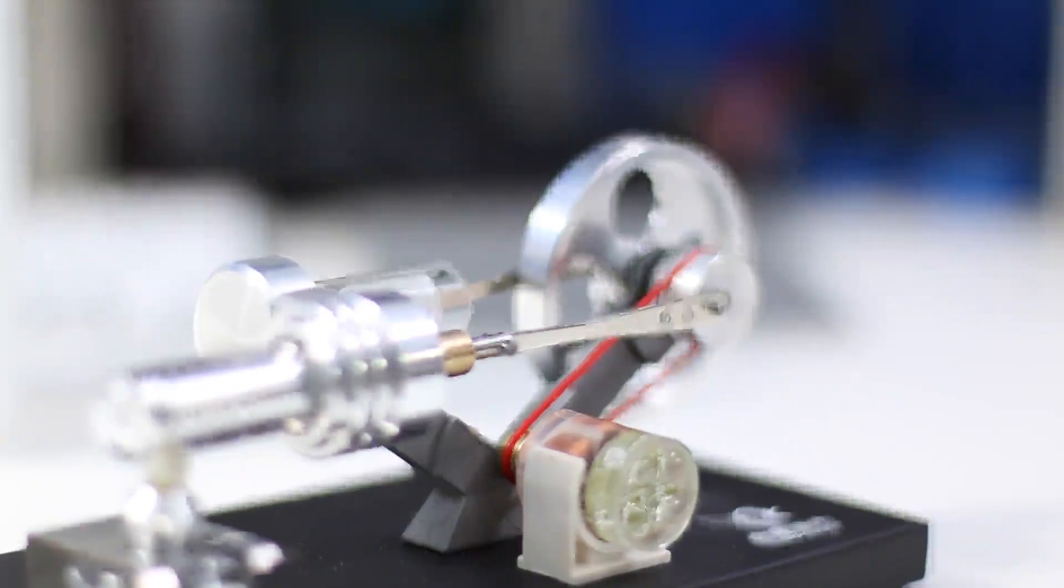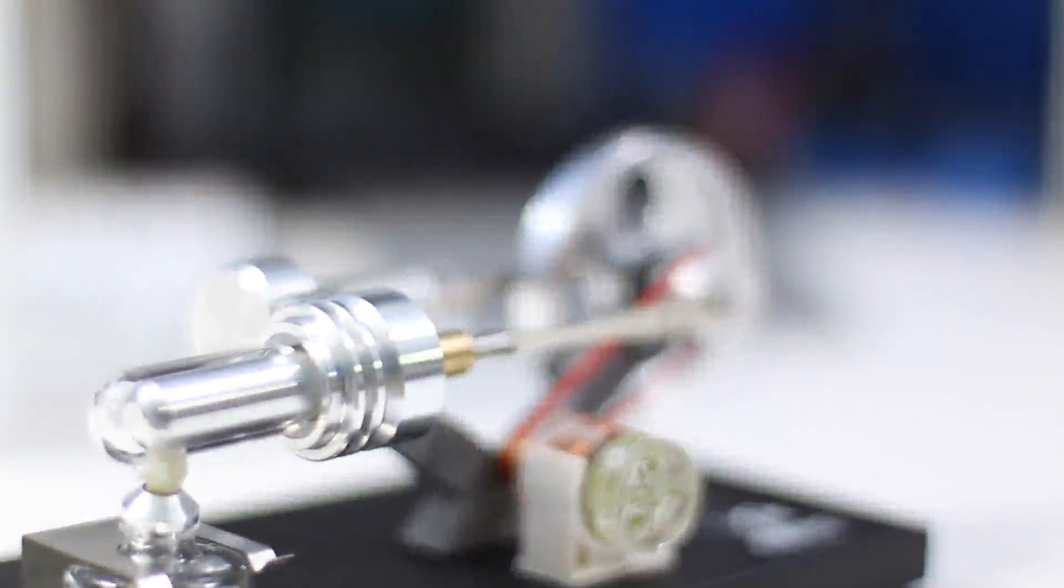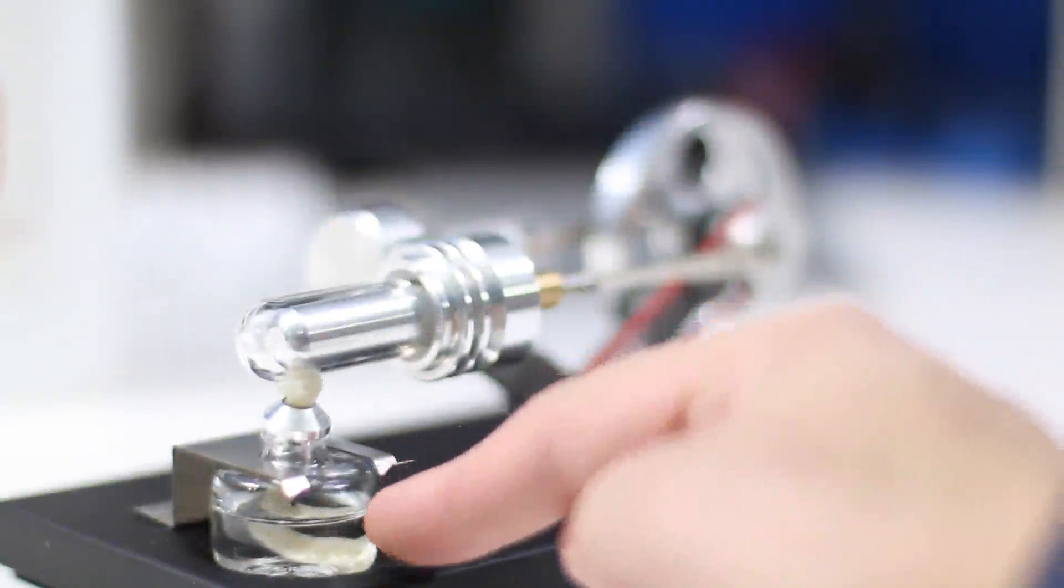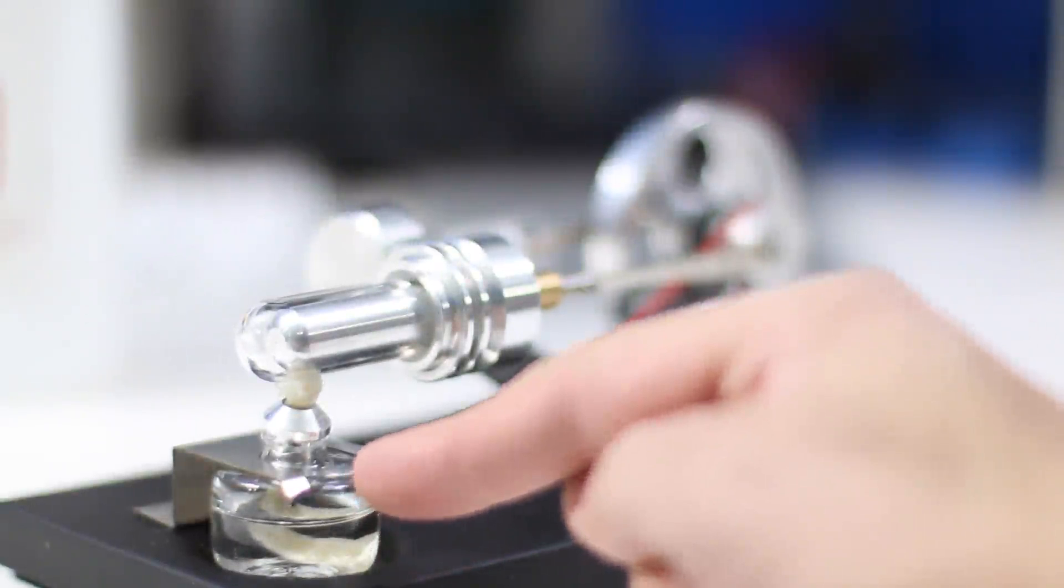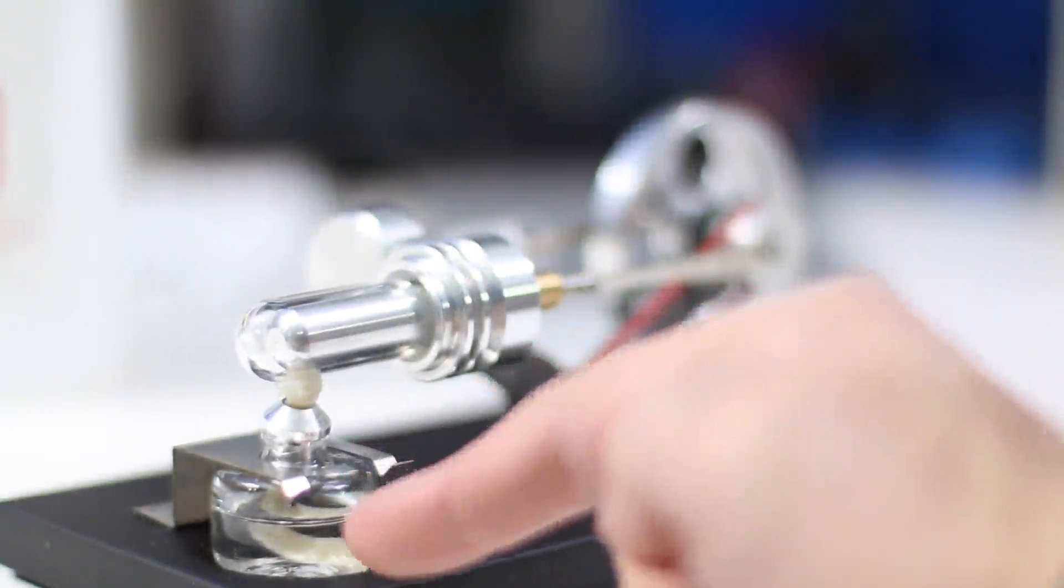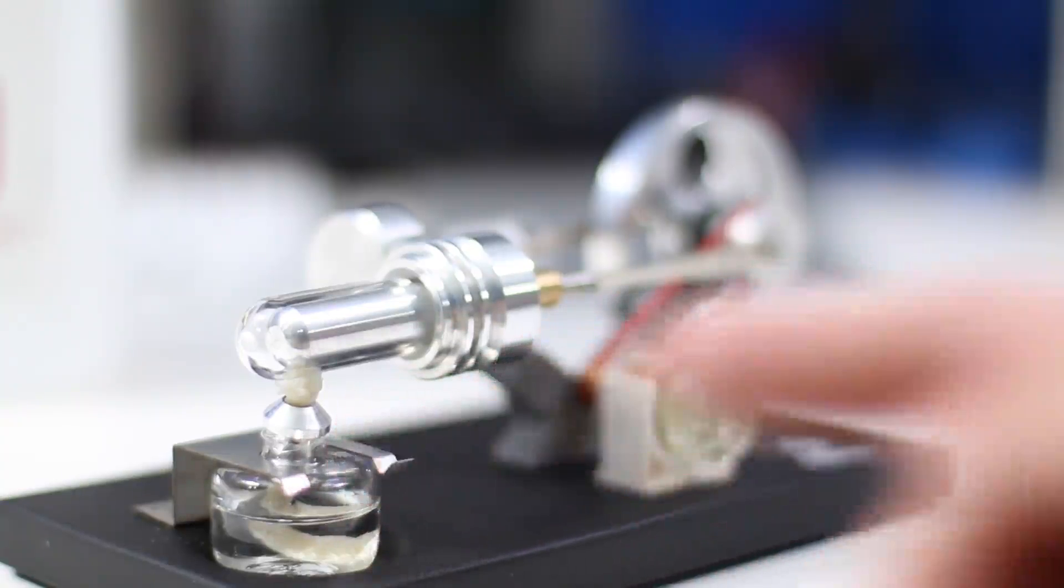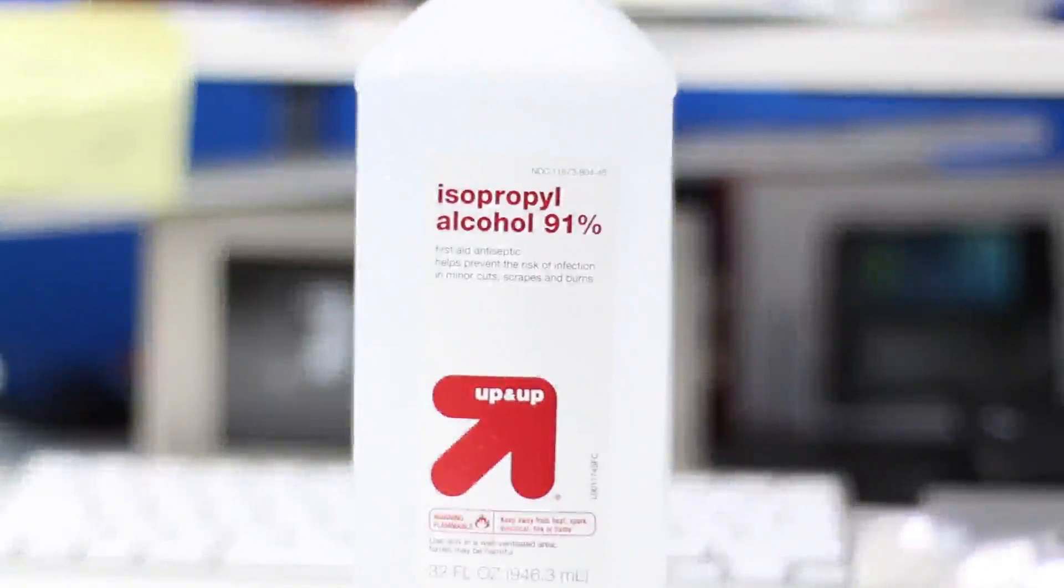So if you're not familiar with Stirling engines, what we have here is a heat source. A Stirling engine is an external combustion engine which means that we generate heat from the outside. In this case we're using an alcohol lamp, and that alcohol lamp is running basically off the shelf isopropyl alcohol.